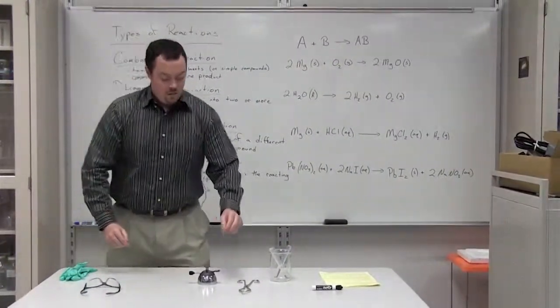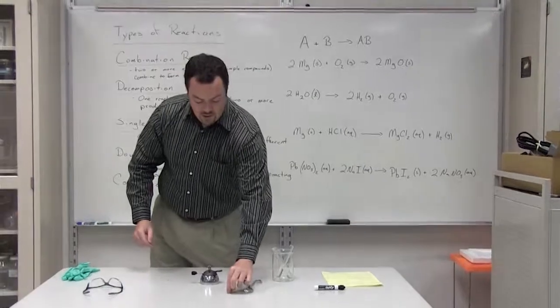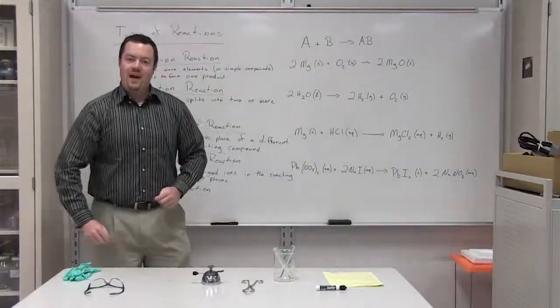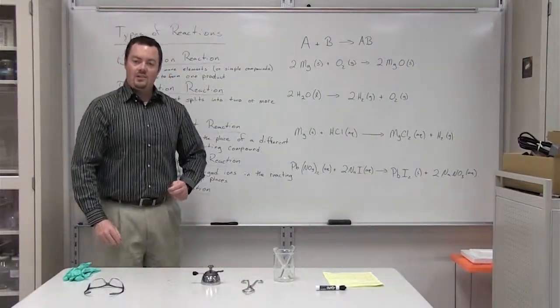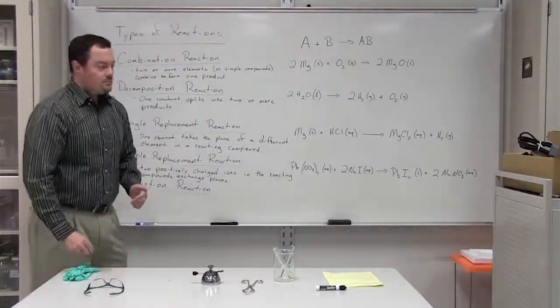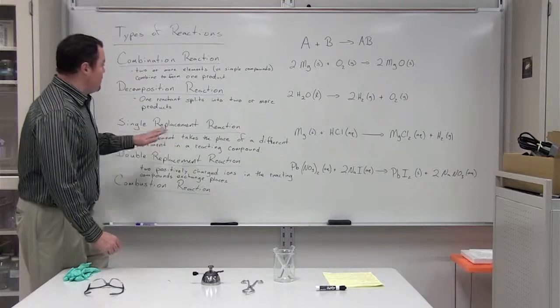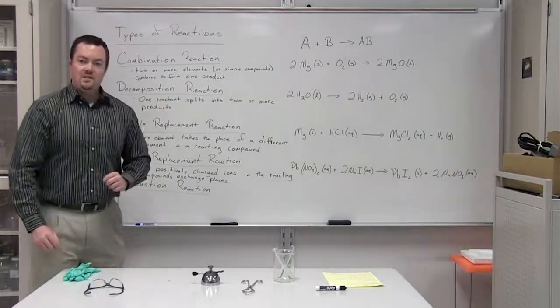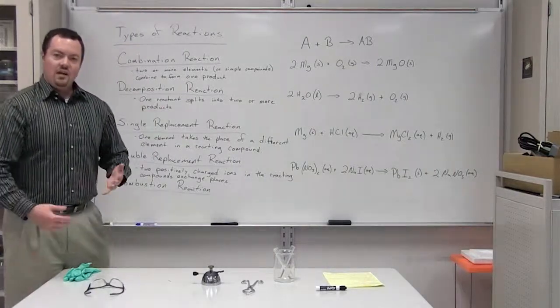Whenever magnesium reacts with oxygen with the help of a flame, we get a very bright white light. The product that is left over is magnesium oxide.